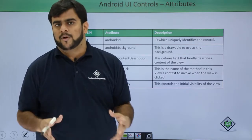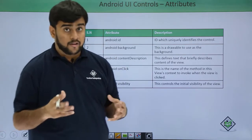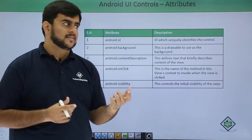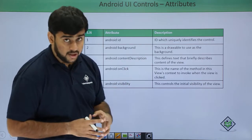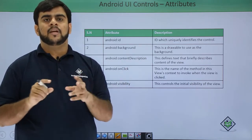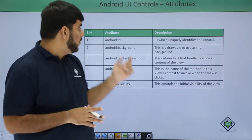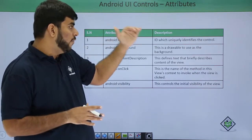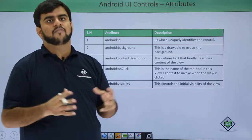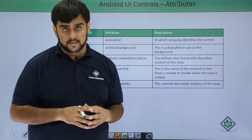In this one, you will be seeing what are the common attributes for UI controls. The very first attribute is the Android ID. This is a unique identification for the control — a unique name or unique number we give to our control. We need to make sure we have a different ID for all the controls, because if we have the same or similar IDs, it would be an issue when we are accessing them.